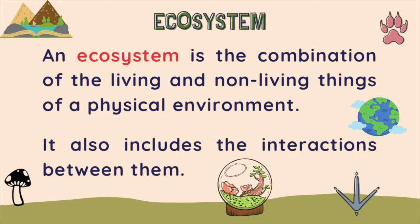Well, first of all, what is an ecosystem? An ecosystem is the combination of the living and non-living things of a physical environment. It also includes the interactions between them.